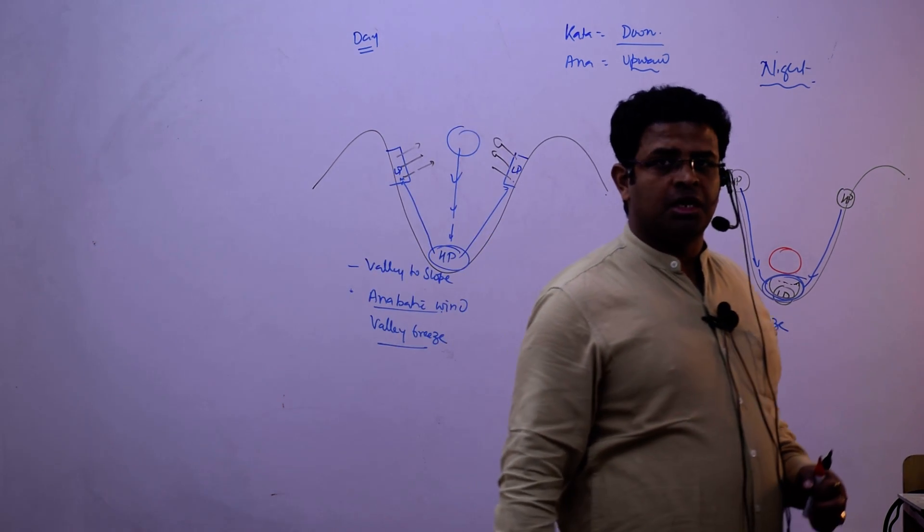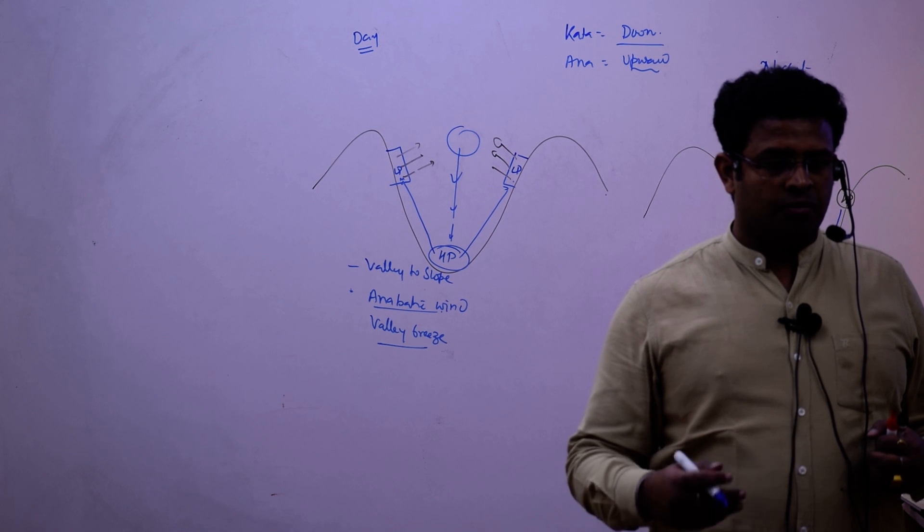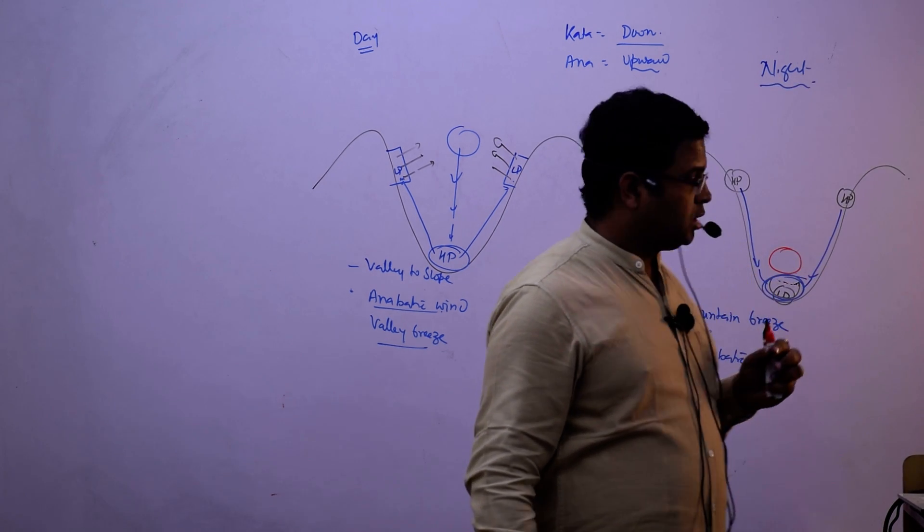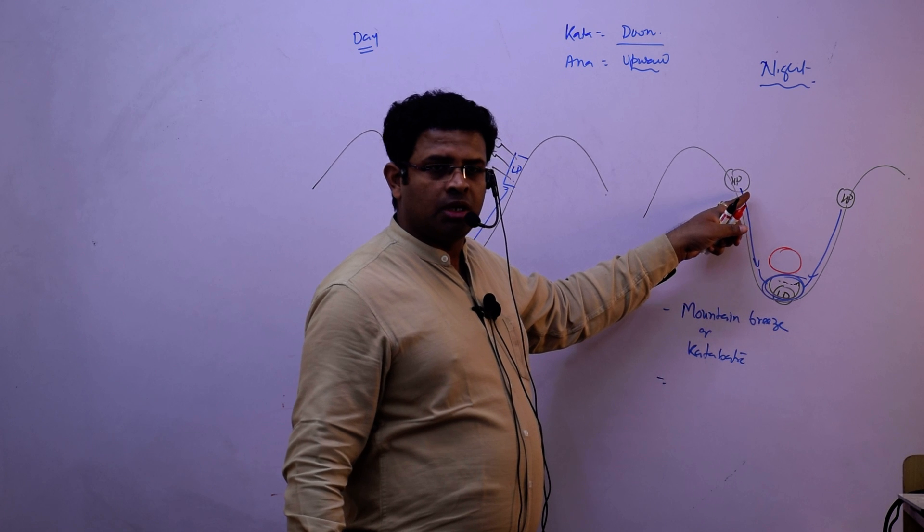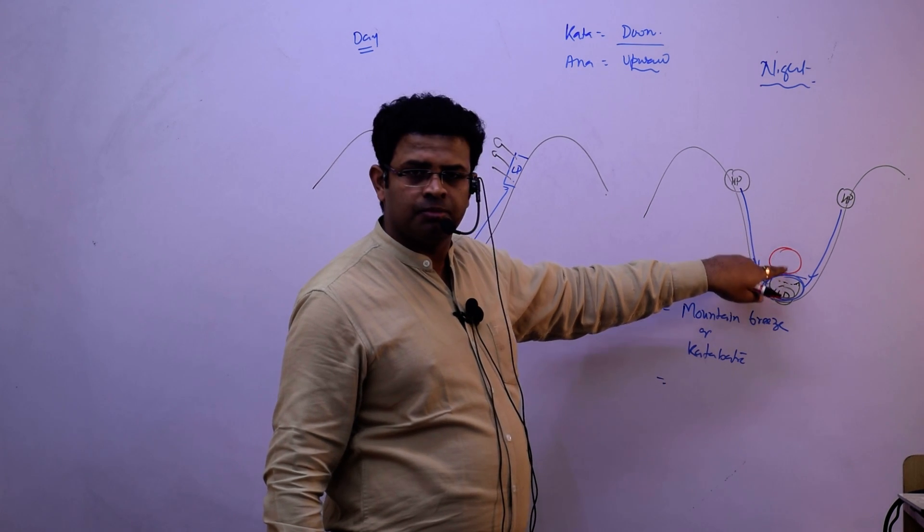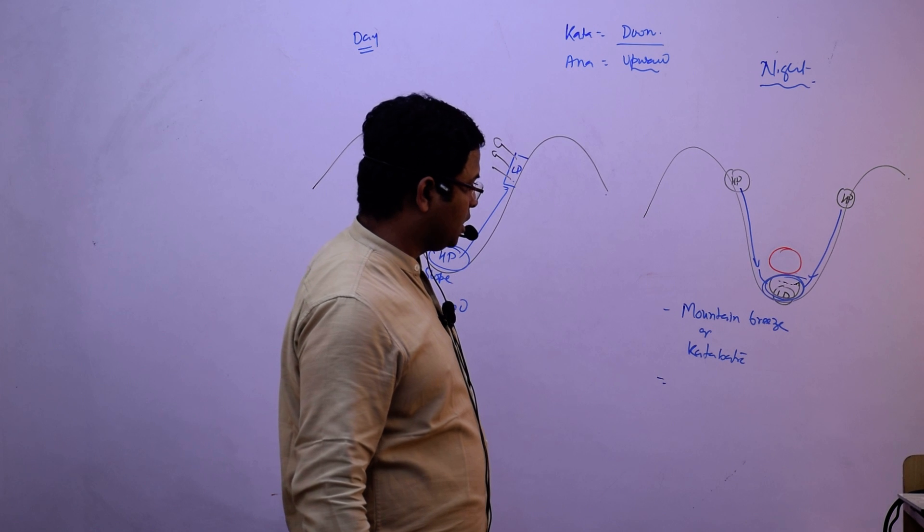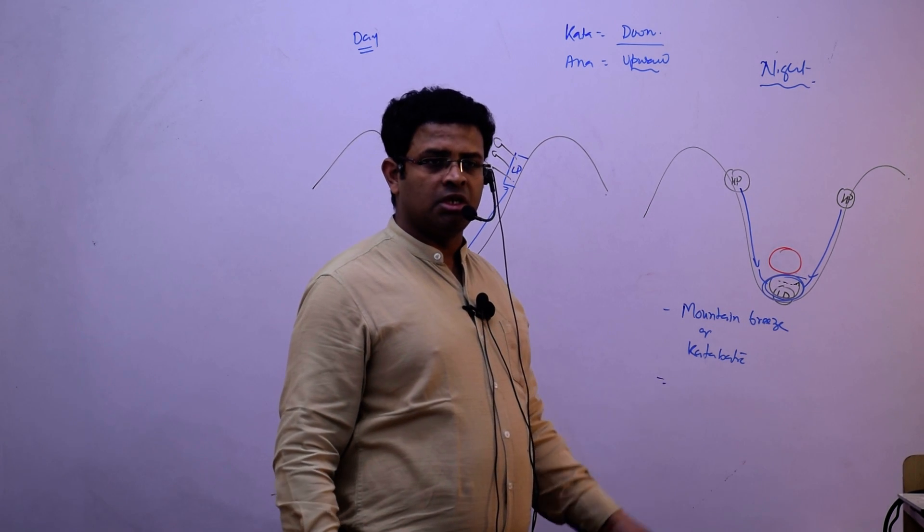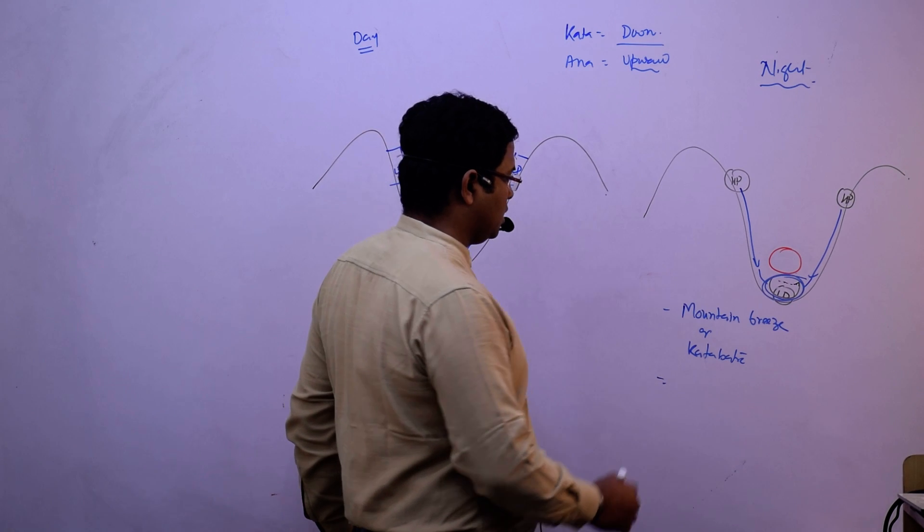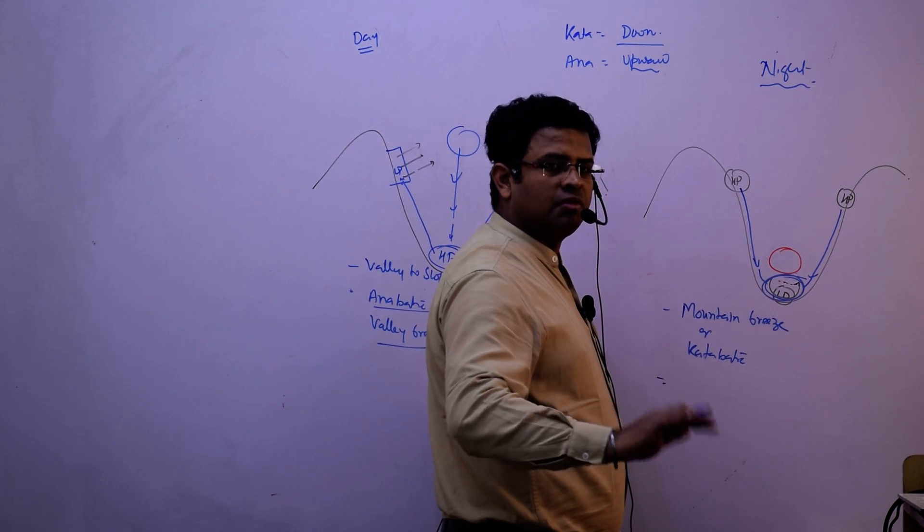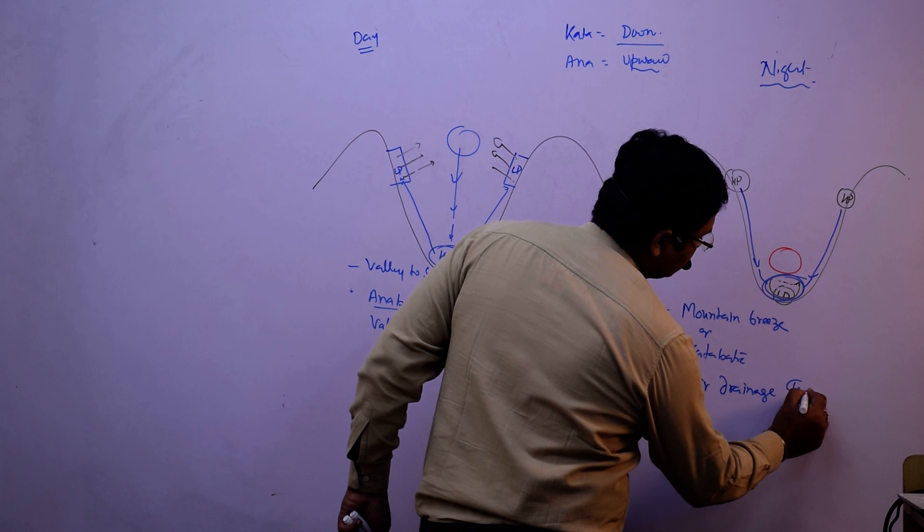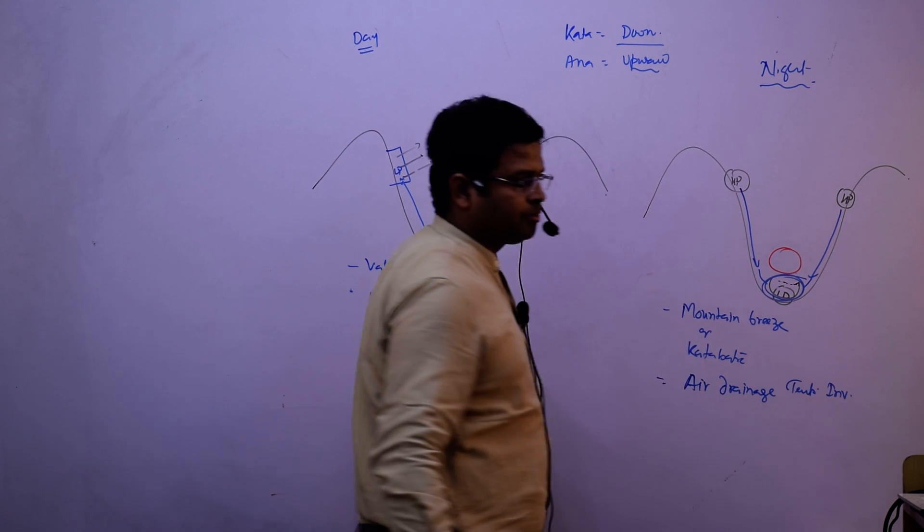What happens? With increasing height, temperature decreases. With increasing height, when the temperature increases, it is known as Temperature Inversion. So here temperature inversion, it is known as Air Drainage, Temperature Inversion. Air Drainage Temperature Inversion sustained and here cold waves keep on passing.